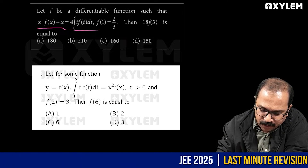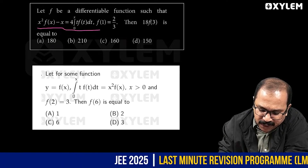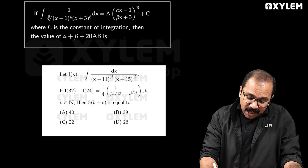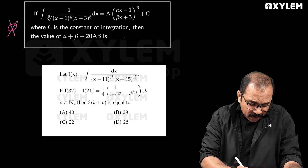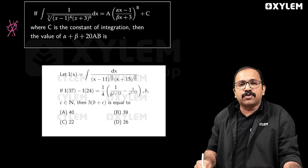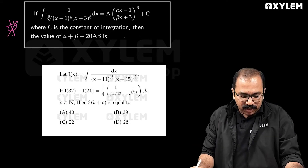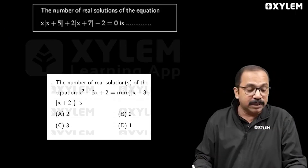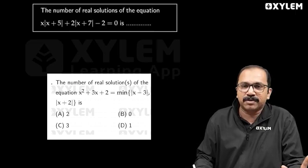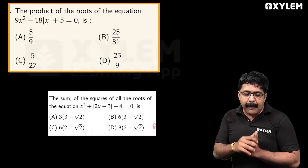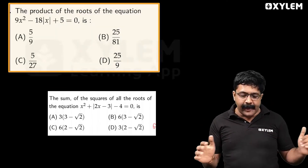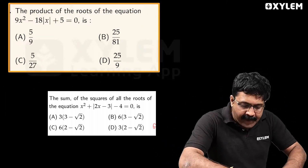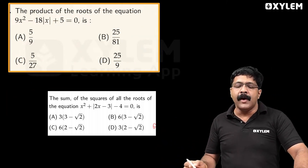The type of question: let f be a differentiable function such that x squared f of x minus x equals 4 into the integral from 0 to x of t·f(t) dt. The number of real solutions. Product of the roots of the equation 9x² minus 18 mod x plus 5 equals 0.